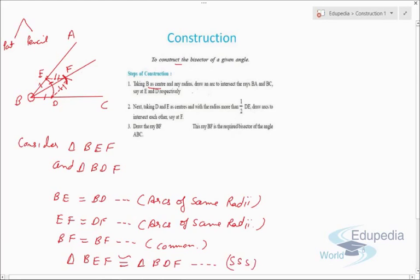By CPCT, we can say that angle EBF equals angle DBF. This justifies our construction — since angle EBF equals angle DBF, ray BF bisects angle EBD. This is how we justify the construction of an angle bisector.